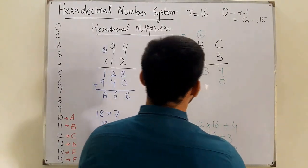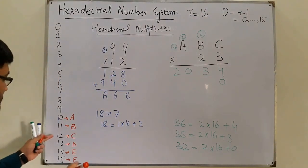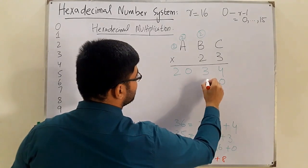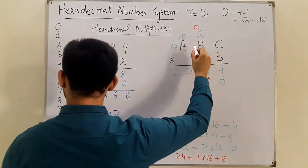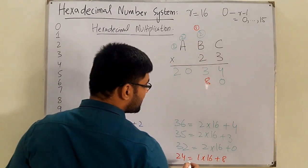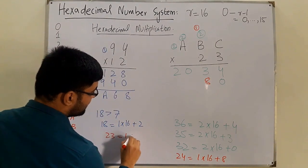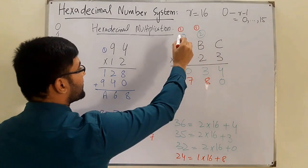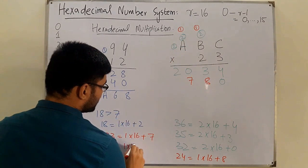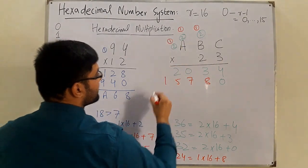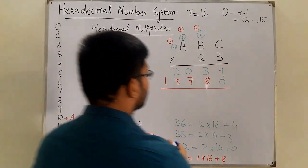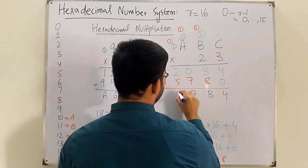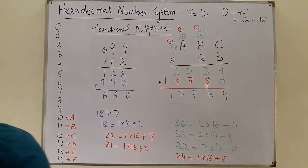For the 2's row of ABC × 23: 2 × C = 24 = 1 × 16 + 8, product 8, carry 1. 2 × B = 22 + 1 = 23 = 1 × 16 + 7, product 7, carry 1. 2 × A = 20 + 1 = 21 = 1 × 16 + 5, product 5, carry 1. Row: 1578. Adding both rows: 2034 + 15780. Final answer: 17BB4.